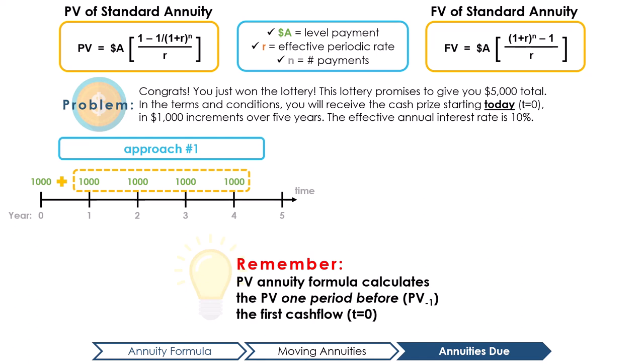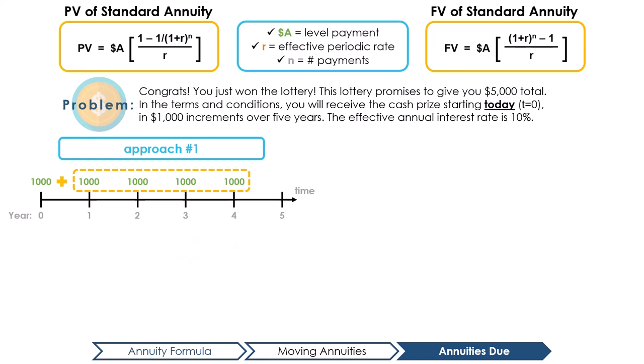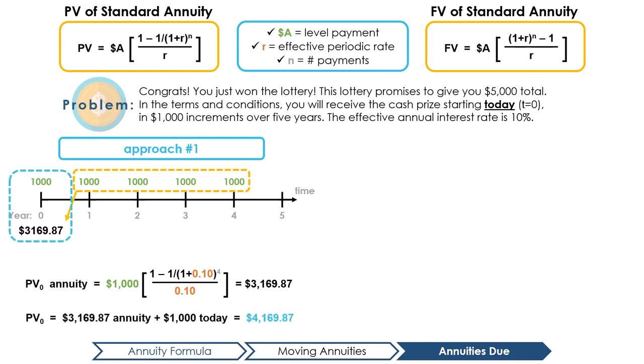Through using the PV of an annuity formula, the value of a four payment annuity is $3,169.87. So by adding $1,000, we get PV 0 equals $4,169.87.